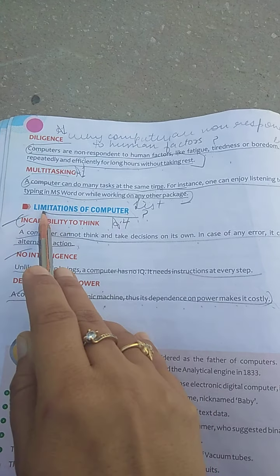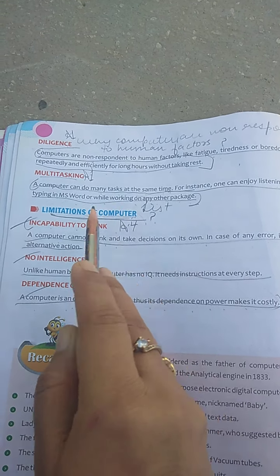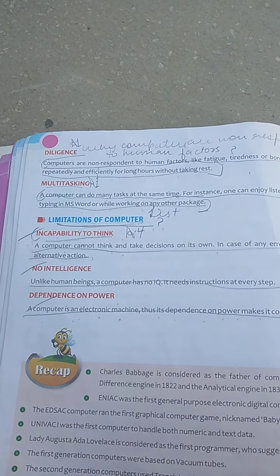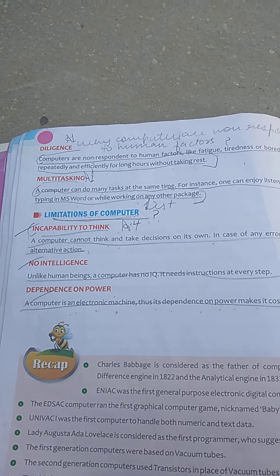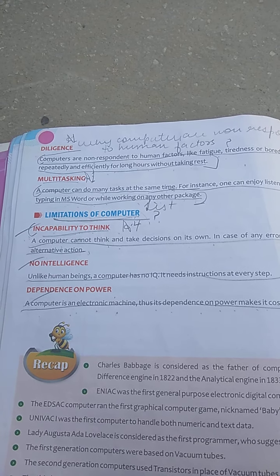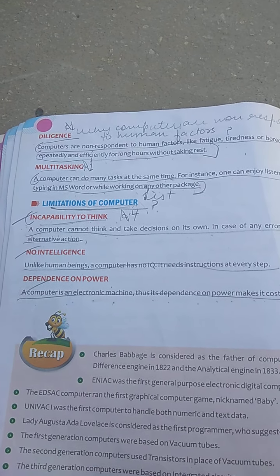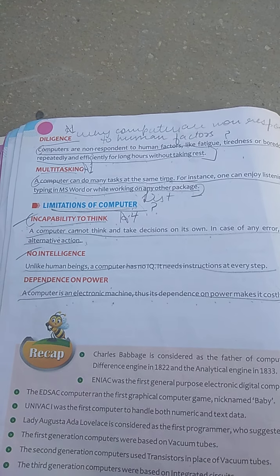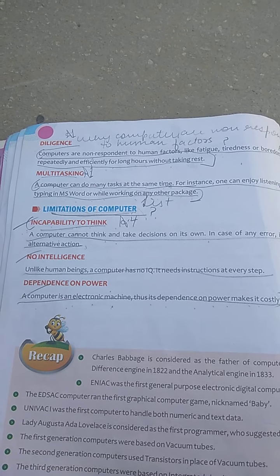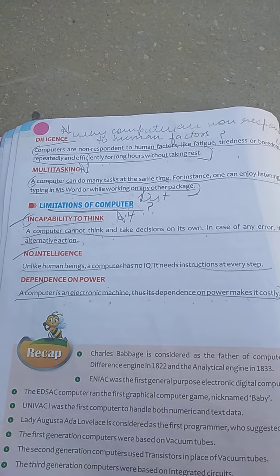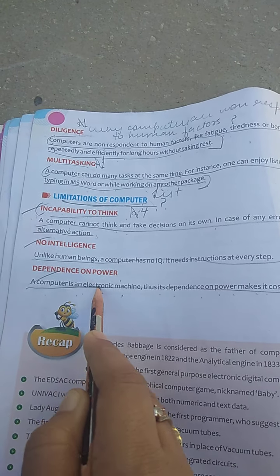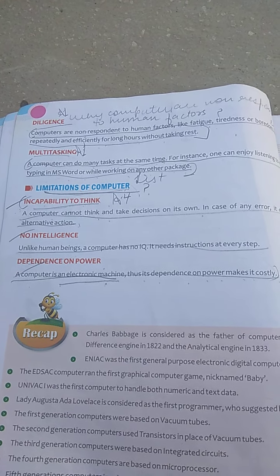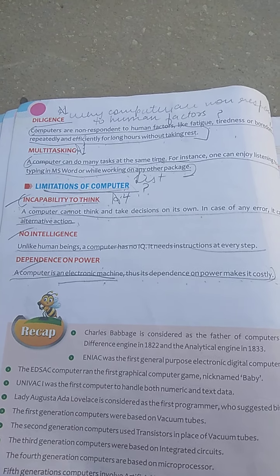Next are the limitations of computers, which are the disadvantages. First is incapability to think — unlike human beings, a computer cannot think on its own; it must follow all programs and step-by-step instructions given to it. Next is no intelligence — computers do not have an Intelligence Quotient (IQ) and cannot think for themselves what is good or bad; they must follow stepwise instructions. Next is dependence on power — as an electronic machine, the computer works on electricity, and once the electricity is shut down, the computer shuts down automatically.